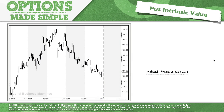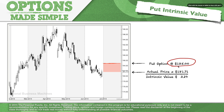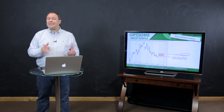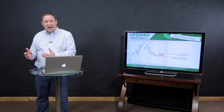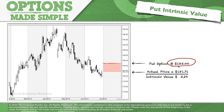Here's a put intrinsic value example. The actual price of the stock is $181.71. If you have a put option at a $185 strike price, you have the right to sell the stock at $185 per share, but the actual price is $181. Would you rather sell at $185 or at $181? Obviously at $185, because it's more valuable. That difference between the strike price and the stock price is intrinsic value — in this case $3.29.